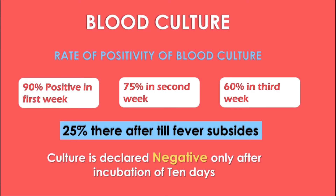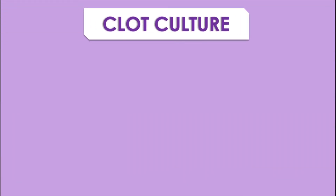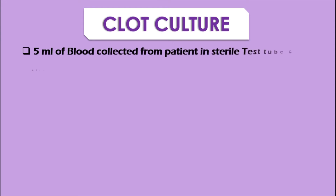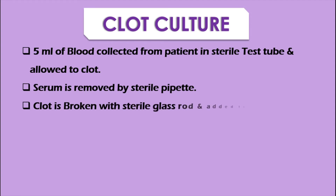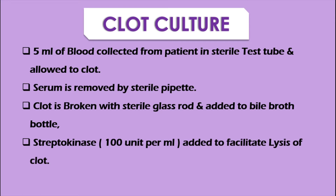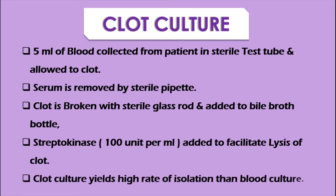An alternative to blood culture is the clot culture. Here, 5 ml of blood is collected from the patient in a sterile test tube and allowed to clot. The serum is removed by sterile pipette, then the clot is broken with a sterile glass rod and added to a bile broth bottle. Streptokinase is added to the medium to facilitate easy lysis of the clot, which yields a higher rate of isolation compared to routine blood culture. Although the isolation rate is higher, it is much more expensive for developing countries, so routine blood culture is generally preferred.